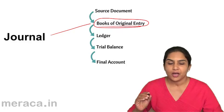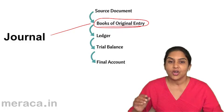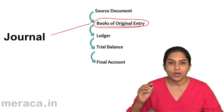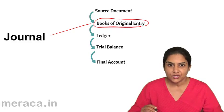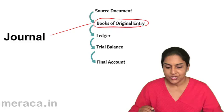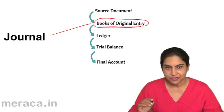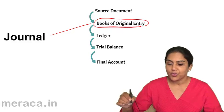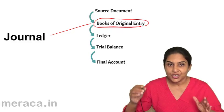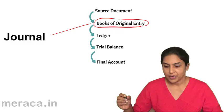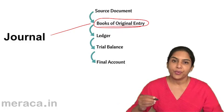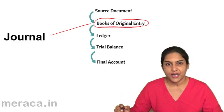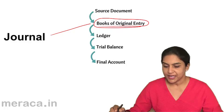So all accounting transactions, all economic transactions, financial transactions, business transactions are recorded first in the journal, the book of original entry. Now we are going to discuss how the journal is prepared, following the rules of journalizing which we have already discussed.